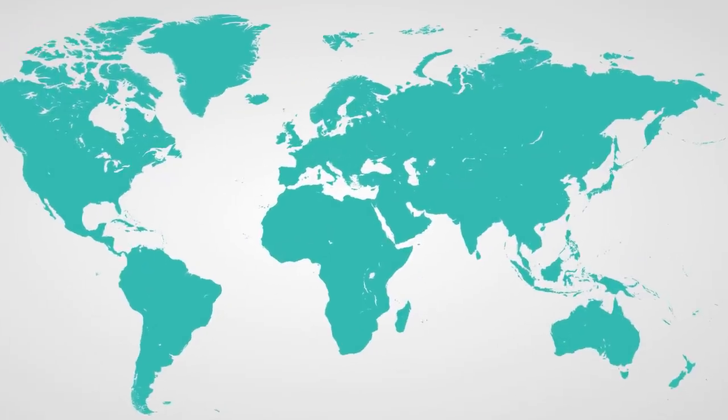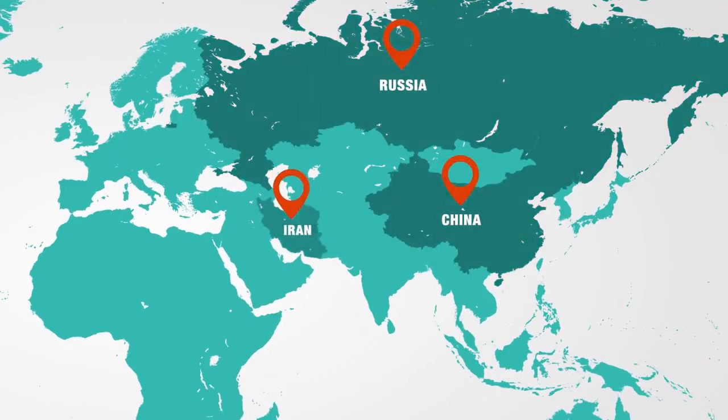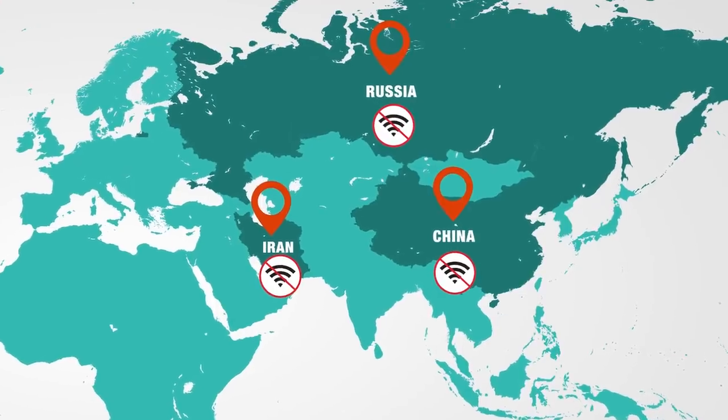In 2016, the UN declared internet access to be a human right, but some countries, such as China, Russia, and Iran, throttle or block certain apps and websites if they aren't to the regime's liking.